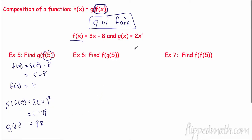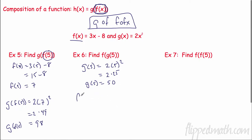Over here you'd think right off the bat it's the exact same thing, but it's a little bit different. In this case I want to find f of g of 5, so I have to find g of 5 first. So it's 2 times 5 squared. 5 squared is 25, so I have 2 times 25 — g of 5 is 50. Now I plug that in. So I'm going to plug in 50 into my f of x: 3 times 50 minus 8, that's 150 minus 8. So f of g of 5 is 142.